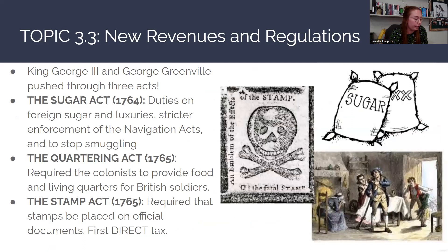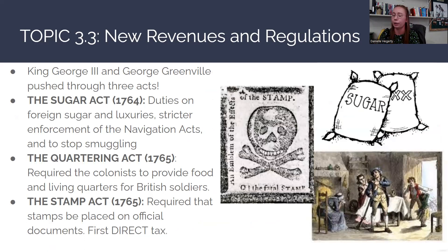King George III and George Grenville pushed through several acts to generate revenue. The first was the Sugar Act, passed in 1764, which placed duties on foreign sugar and luxuries and included stricter enforcement of the Navigation Act. The purpose was not only to raise revenue for Britain but also to stop colonial smuggling to other countries — keeping revenue generated from the colonies going directly to Britain.